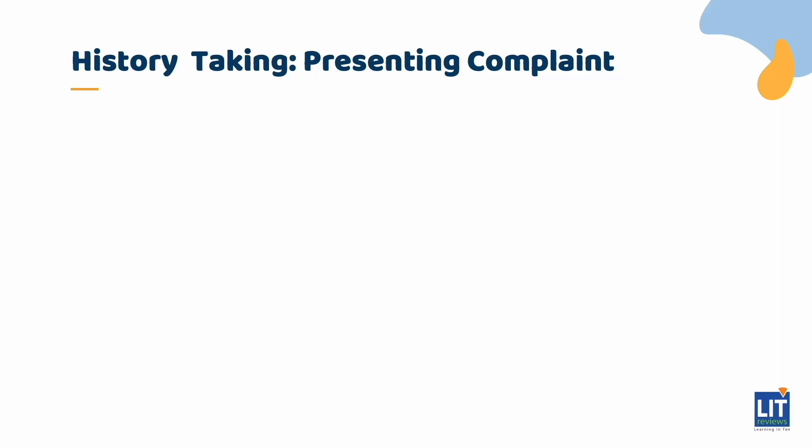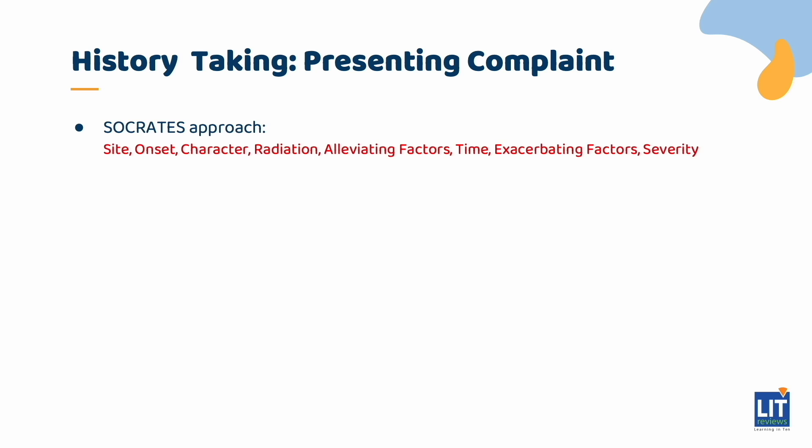When taking history, you can use the SOCRATES approach, which asks about site, onset, character, radiation, alleviating factors, time, exacerbating factors, and severity. Pertinent points to ask would be to clarify what the patient means by chest pain — ask about the nature of the pain, whether it is a sharp poking pain, throbbing pain, or feeling of tightness in the chest. Importantly, was it triggered by exertion? This is a red flag. Conversely, chest pain that occurs while the child is at rest is very likely to be cardiac in origin.